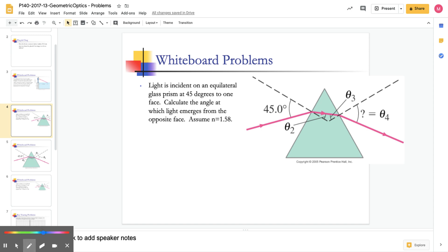Okay, this problem has to do with the prism, and we know that this is a refraction problem. So we'll just say refraction up here. They tell us that our incident angle is 45 degrees. This is our theta i. They tell us that our index of refraction for the prism is n is equal to 1.58. And we need to calculate the angle at which the light emerges. So we're looking to calculate theta 4. That's what we want to find out what theta 4 is.